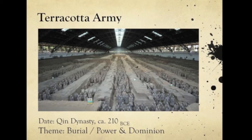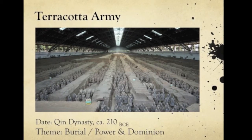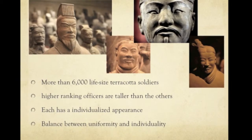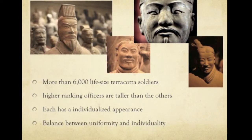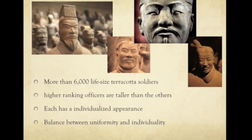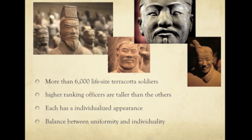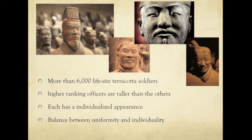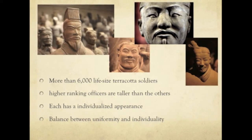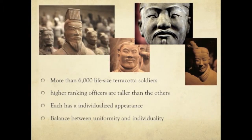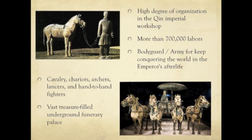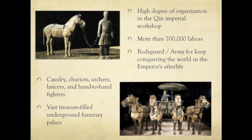At 221 BCE, Qin Shi Huang first brought China unity. He was buried beneath an immense mound guarded by more than 6,000 life-sized terracotta soldiers. Although produced from common molds, every figure has an individualized appearance, resulting in a brilliant balance of uniformity and individuality. The terracotta army consists of statues of cavalry, chariots, archers, lancers, and hand-to-hand fighters.